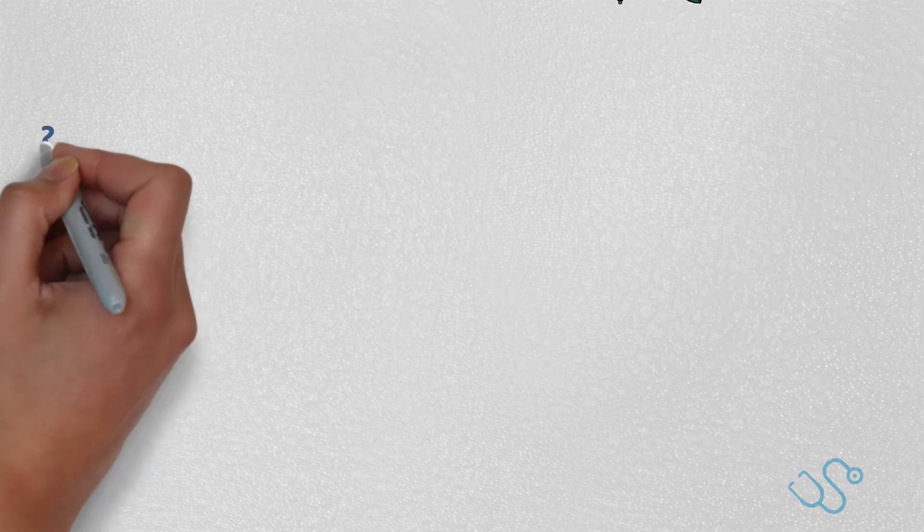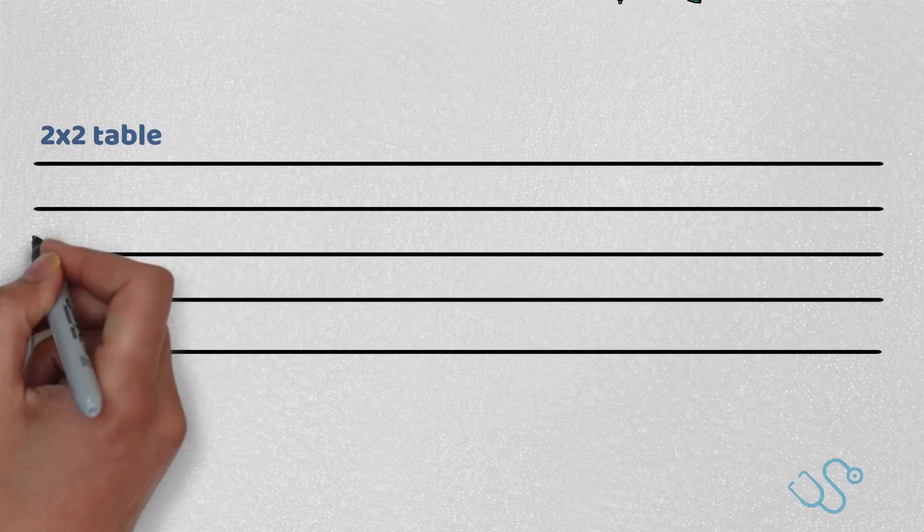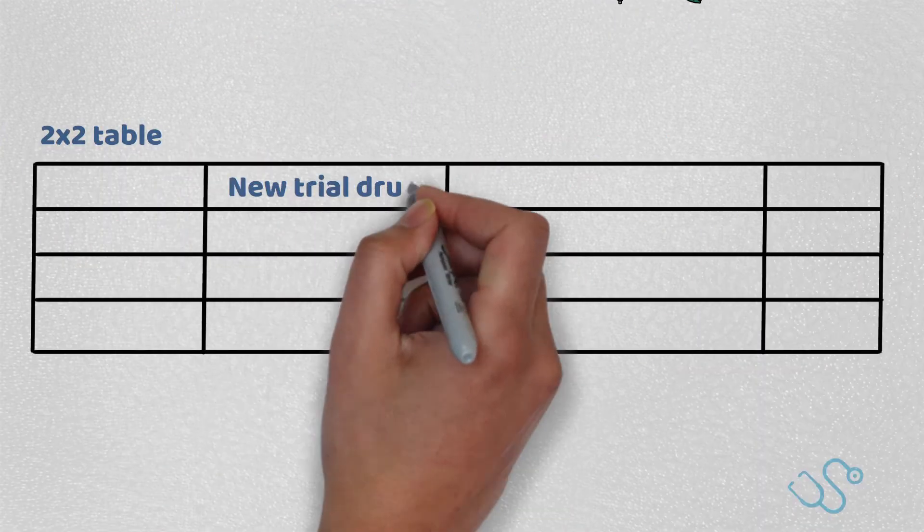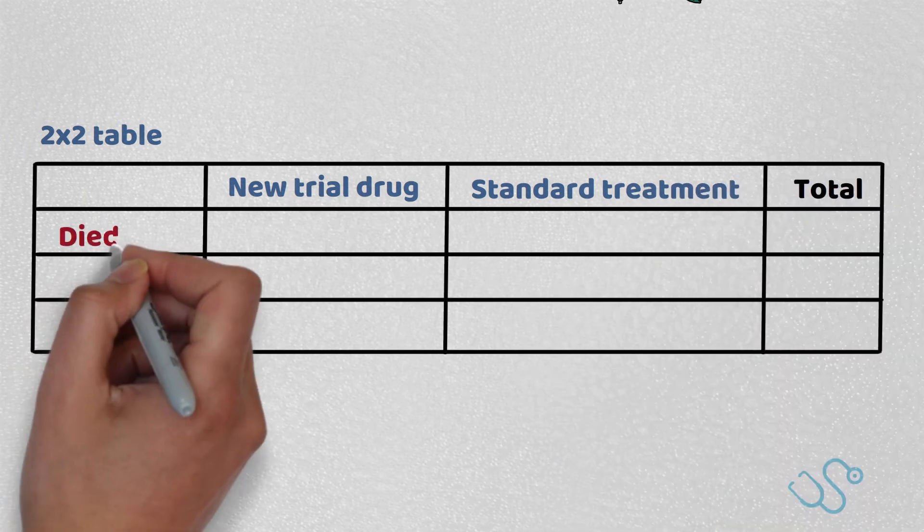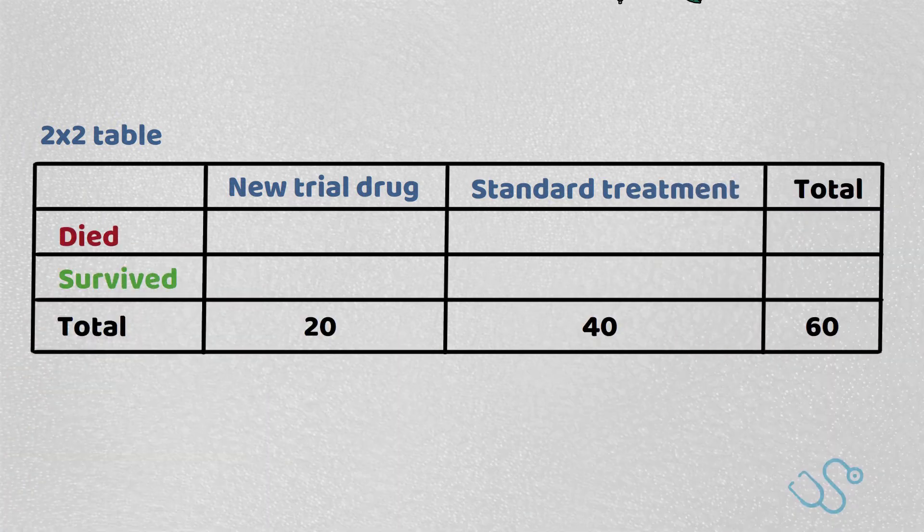Remember, the key thing is to know how to draw two by two tables where there's variables on the top and outcomes on the side. We can start by filling in the totals with the information we have so it looks something like this.